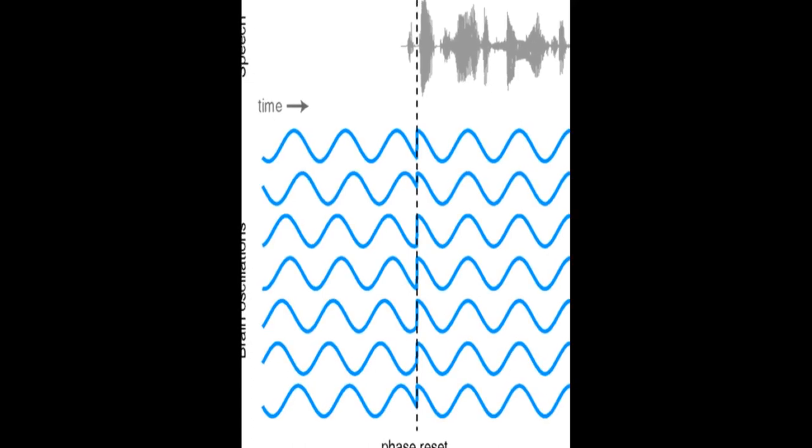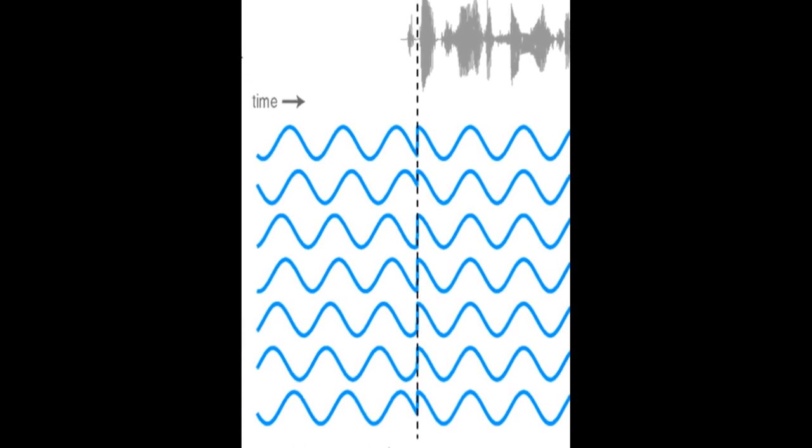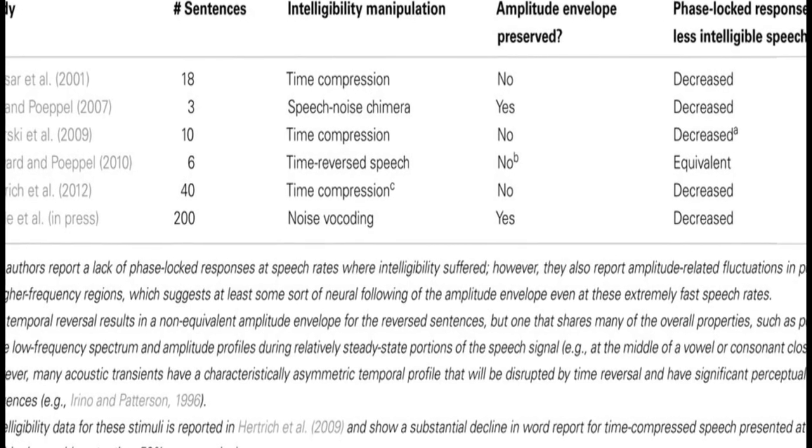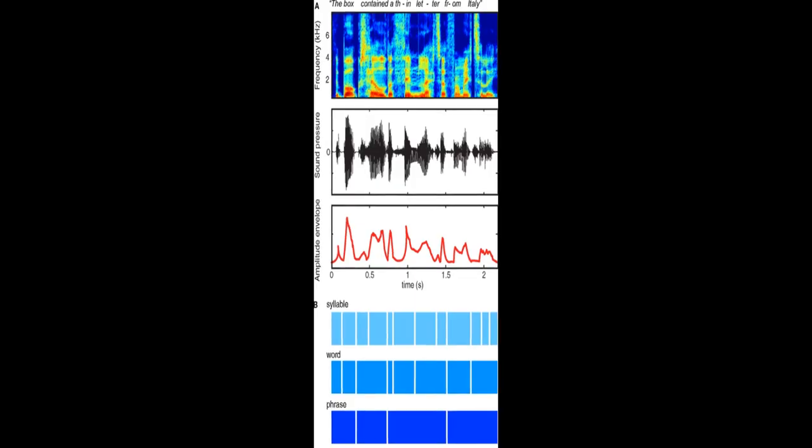The article discusses the importance of speech rhythm and how it is conveyed through amplitude modulations in the slow rhythmic information contained in speech. It explains that listeners rely on this information to understand place and manner of articulation, segmental information, and speech rate.